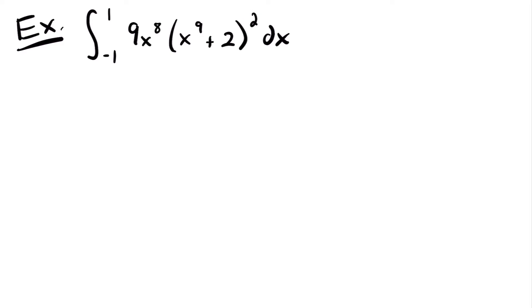The first thing we want to do to solve this definite integral using u-substitution is to figure out what we're going to set u equal to. In most cases, when you see a composite function within your integrand — such as x to the 9th power plus 2, quantity squared — you want to set that inside function equal to u. In most cases, that's going to work.